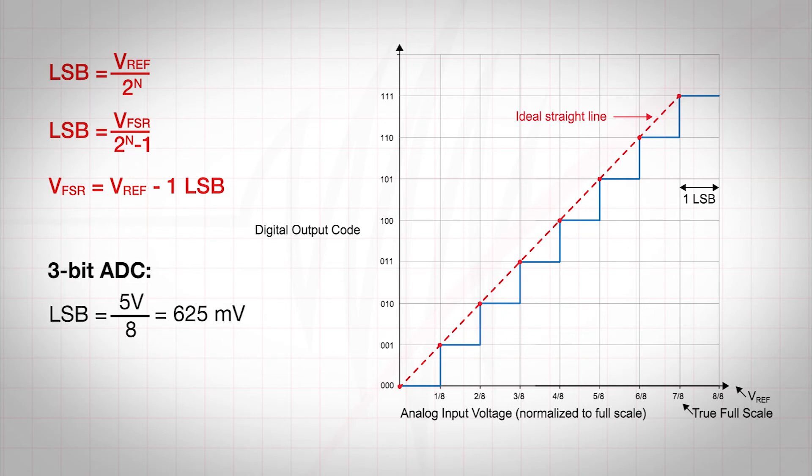With a 5-volt voltage reference, a 3-bit ADC would have an LSB of 625 millivolts, and an 8-bit ADC would have an LSB of 19.531 millivolts.